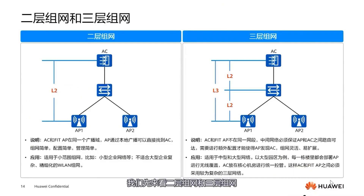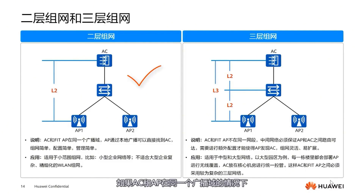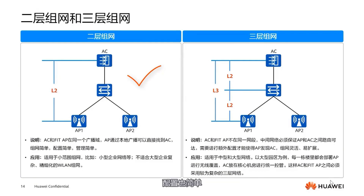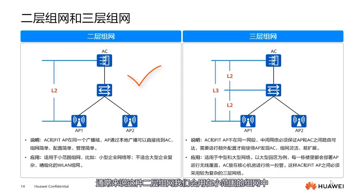Let's start with layer 2 and layer 3 networking. From this diagram, we can see that if the AC and APs are in the same broadcast domain, it constitutes layer 2 networking. In this scenario, APs can find the AC directly through local broadcast. This type of networking is very simple — simple to configure and simple to manage. Typically, this layer 2 networking is used in small-scale networks.